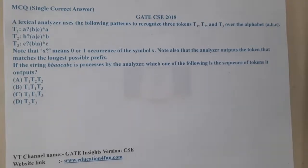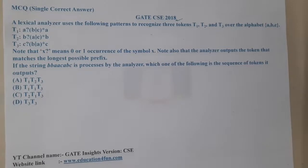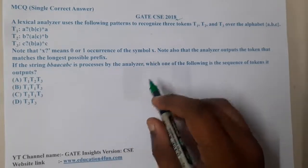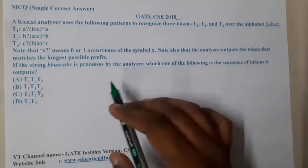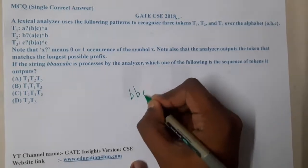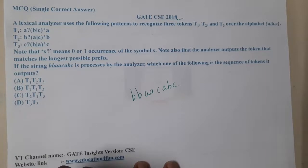In this lecture we go through the next question from GATE CSE 2018. A lexical analyzer uses the following patterns to recognize three tokens T1, T2, and T3 over the alphabet {a, b}. They also note that the analyzer outputs the token that matches the longest possible prefix. If the string 'b b a a c a b c' is processed by the analyzer, which of the following is the sequence of token output?